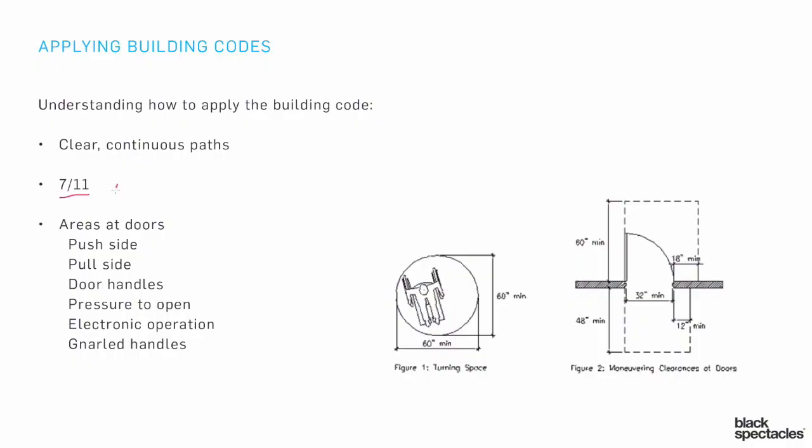That comes from the idea that people with disabilities — walkers, people with broken legs, and all those kinds of issues — can easily do a 7-inch riser but have a much harder time doing a 7½ or 8-inch riser. Just that little difference makes a big difference, and so that's why it's considered the accessible stair.